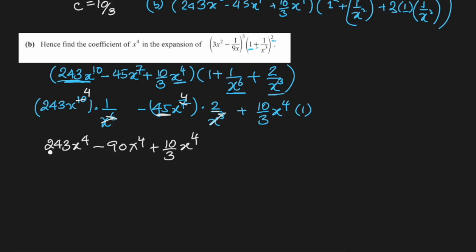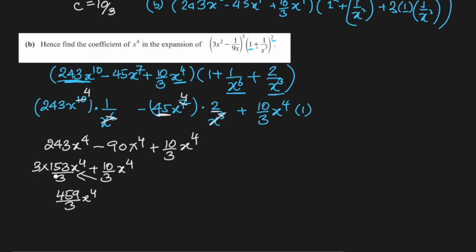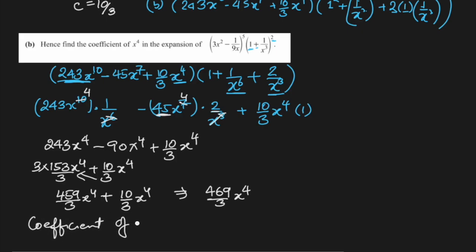Simplifying: 243 - 90 = 153, and converting to thirds: 153 = 459/3. Adding 10/3 gives 469/3. Therefore, the coefficient of x⁴ is 469/3.